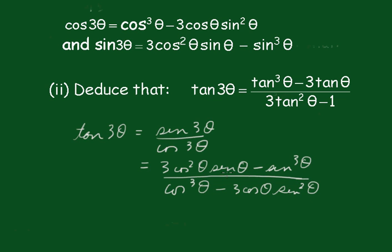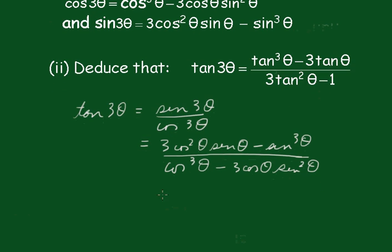Now what I need to do is get a 1 in here. If I divide by cos³θ I'll get the 1, but they're the wrong way round. So I'll multiply top and bottom by negative 1, which brings sin³θ to the front.